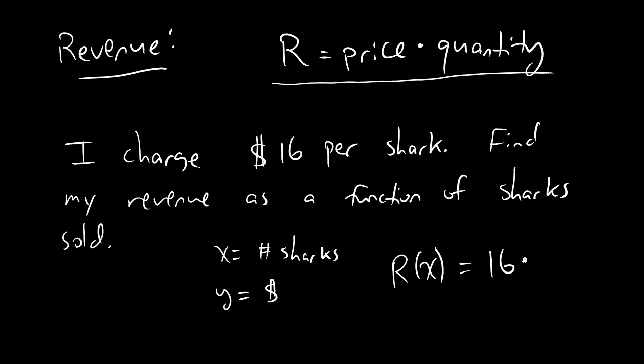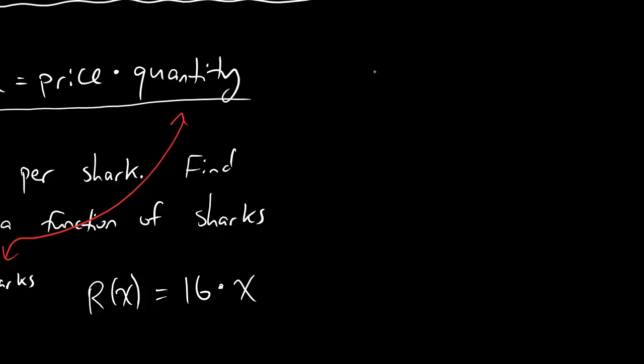The quantity in general is going to refer to the number of whatever you sell. And check it out. The number of things I sell is exactly what I mean by x. So in this case, when we have price times quantity, it's just price times the variable x. And dudes, in fact, when you're doing revenue equations, this will basically always happen. If you're setting up the formula for revenue, then your formula for revenue will always look like revenue equals some number times quantity.